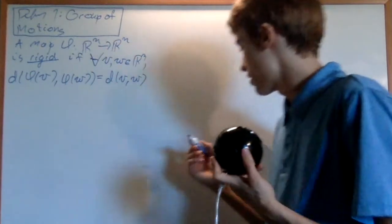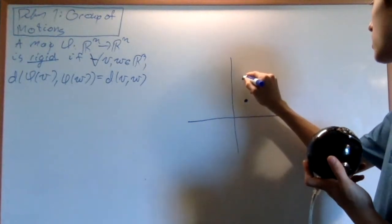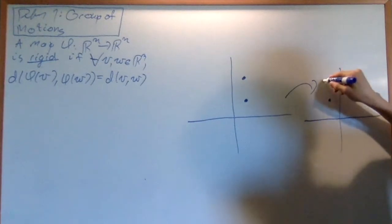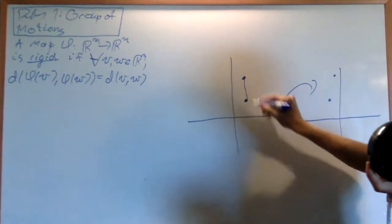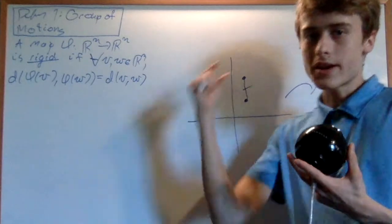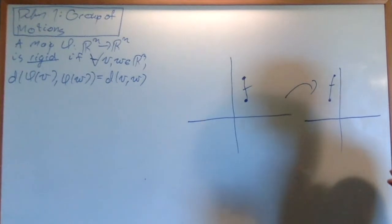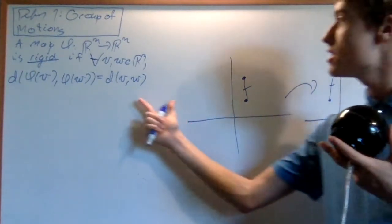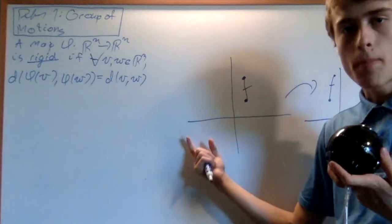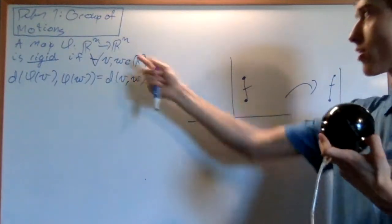So it's distance preserving. I have R2 here, and I have two points, and I look at their image under this map. The thing about them is that this distance is the exact same as this distance, so no matter what two points I pick, their image's distances are the same as their distances. This does nothing to the distances, and you may see this in the definition of congruency between polygons — the image of the polygon under a rigid motion is going to be a congruent polygon, due to the fact that it preserves distances.